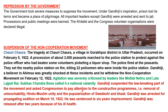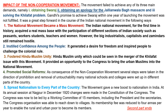The withdrawal of the movement was severely criticized by leaders like Motilal Nehru, Lala Lajpat Rai, and Subhash Chandra Bose, who called it a national calamity. Gandhiji suspended the law-breaking part of the movement and asked Congressmen to pay attention to constructive programs such as removal of untouchability, Hindu-Muslim unity, and the popularization of Swadeshi and Khadi. Gandhiji was arrested for propagating sedition on March 10, 1922 and sentenced to six years imprisonment, but was released after two years due to his poor health.